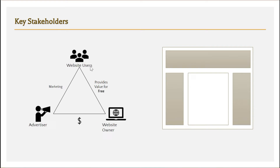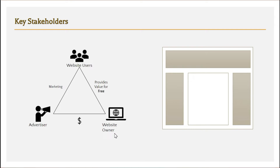These are the three stakeholders which are required for the advertising business model to be successful. One is the website user, the second one is the website owner, and the third one is the advertiser. The first step is that the website owner will provide some valuable content for free to the website user, and the website user logs into the website to get that particular content. The content could be text, video, or any type of digital content.